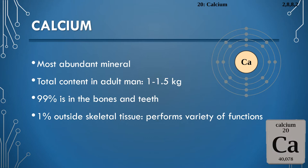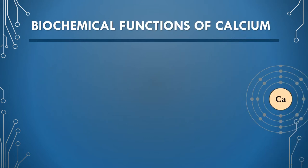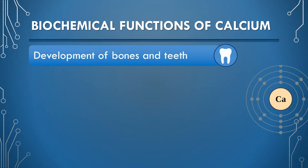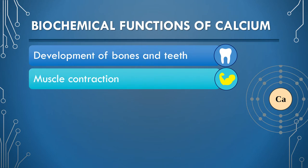Calcium in association with phosphate is required for the formation and physical strength of skeletal tissue. Bone is regarded as a mineralized connective tissue. Bones, which are in a dynamic state, serve as a reservoir of calcium. Calcium interacts with troponin to trigger muscle contraction, activates ATPase, and increases the interaction between actin and myosin filaments.